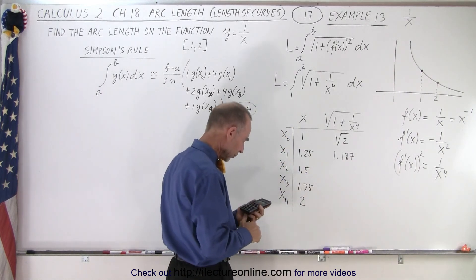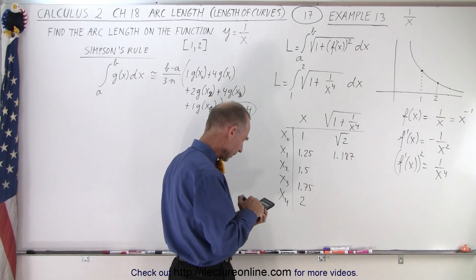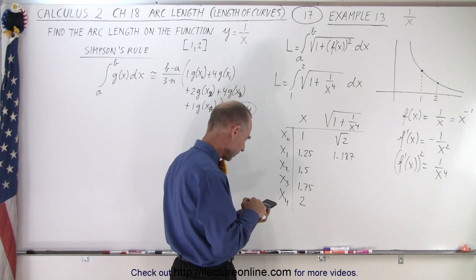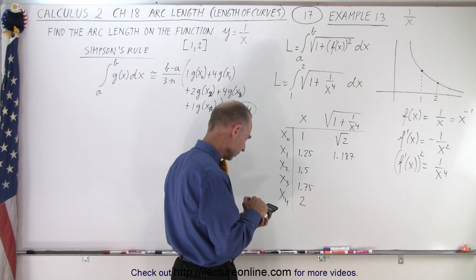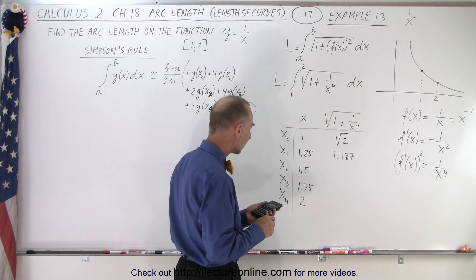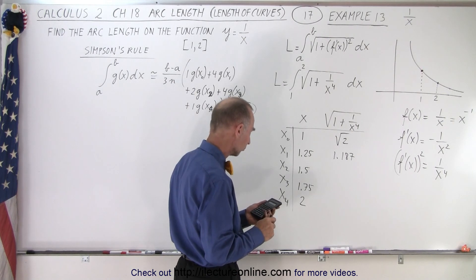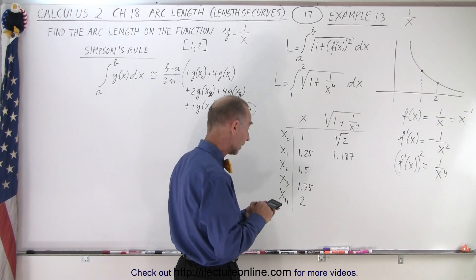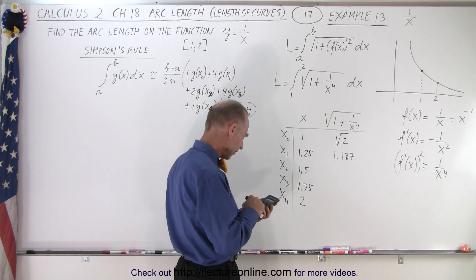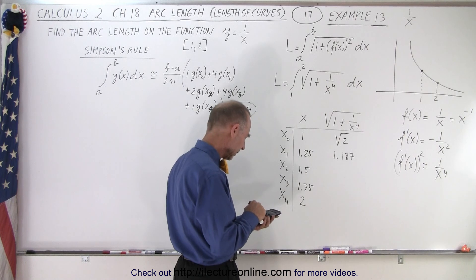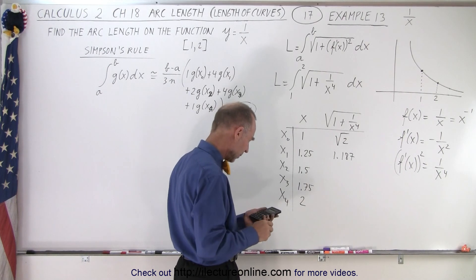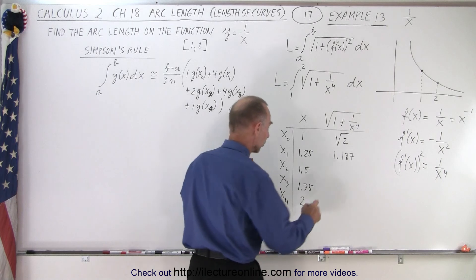For the next one, 1.5 to the fourth power. Take it to the denominator. Add 1, take the square root. And we get... Let me try that again. So 1.5 square, square. Bring it down. Add 1, take the square root. And we get 1.094.